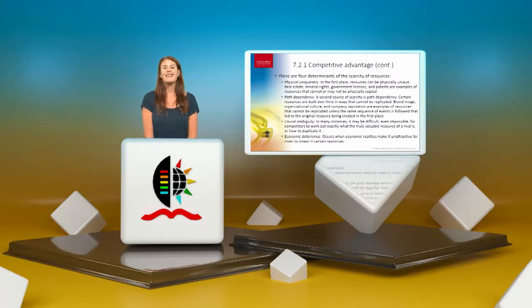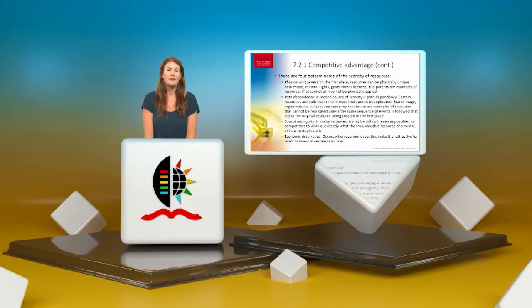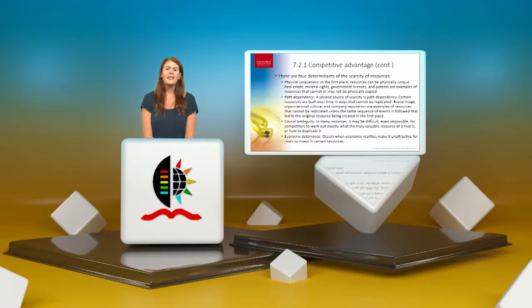There are four determinants of scarcity of resources: physical uniqueness, path dependency, causal ambiguity, and economic deterrence. Physical uniqueness includes things like real estate location, patents, rights, and intellectual property — tangible things that make a resource physically unique.